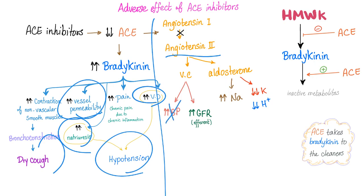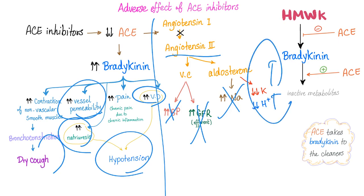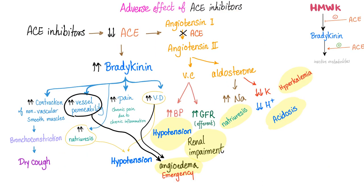By inhibiting the formation of angiotensin 2, you also get hypotension, renal impairment, low sodium, high potassium, and high hydrogen — hyperkalemia and acidosis. All of these are side effects of ACE inhibitors such as enalapril. Here again are the side effects of ACE inhibitors, highlighted for you.